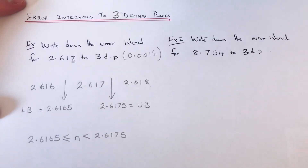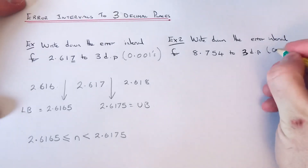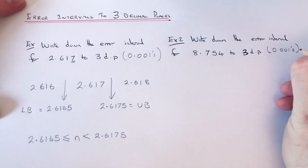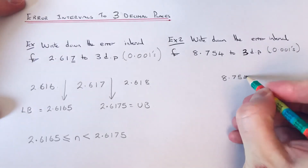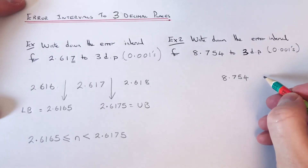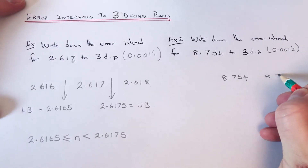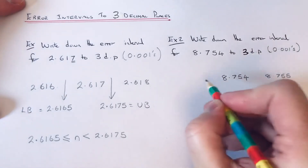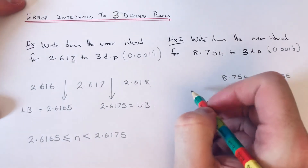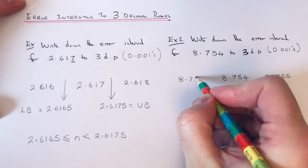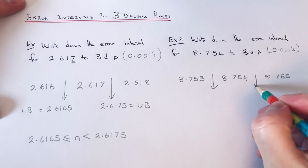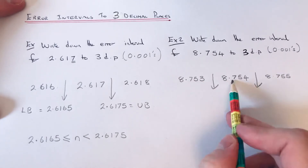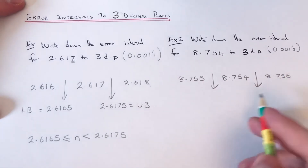Let's do one more example. This time we've got 8.754 rounded off to three decimal places. Again, this means our scale is going up in 0.001s. If we copy 8.754, adding 0.001 gives us 8.755, and taking 0.001 off gives us 8.753.